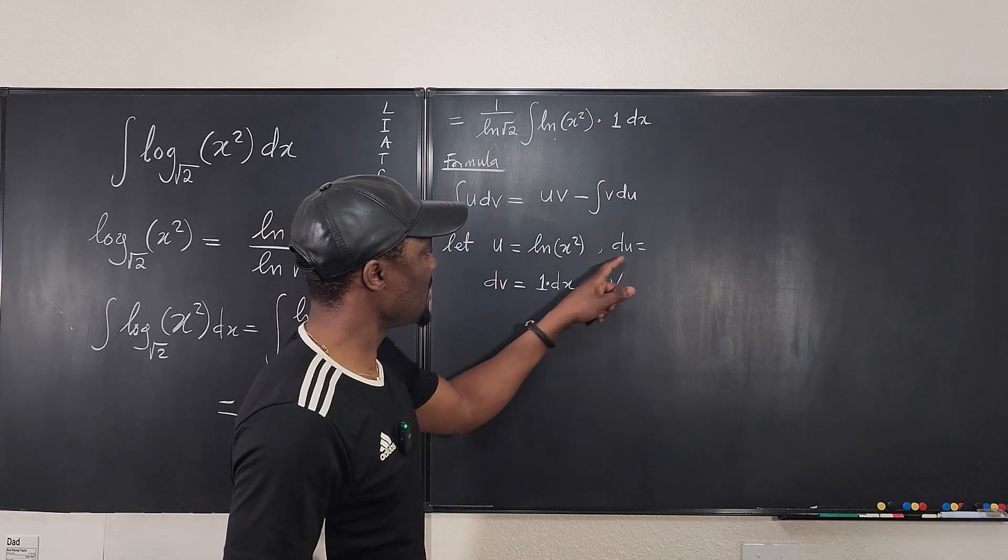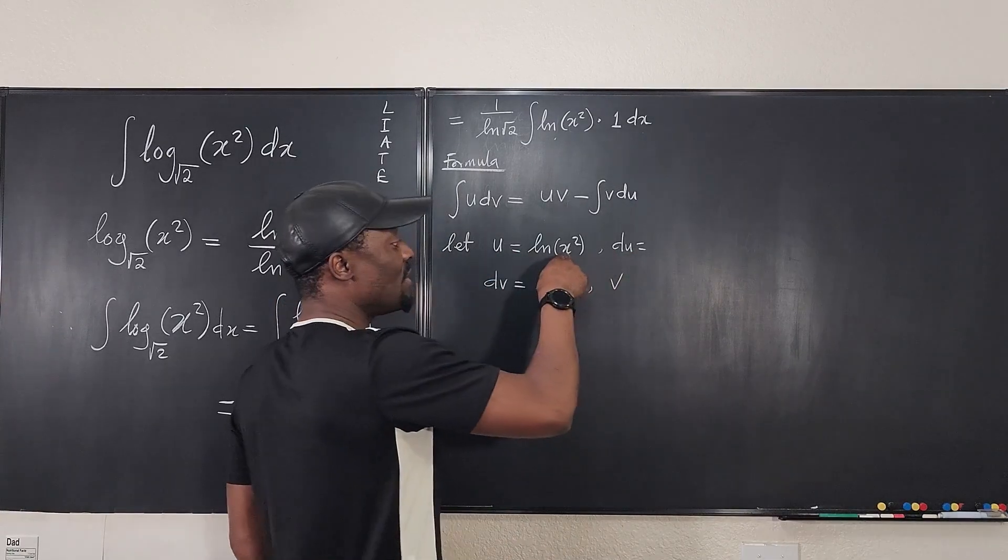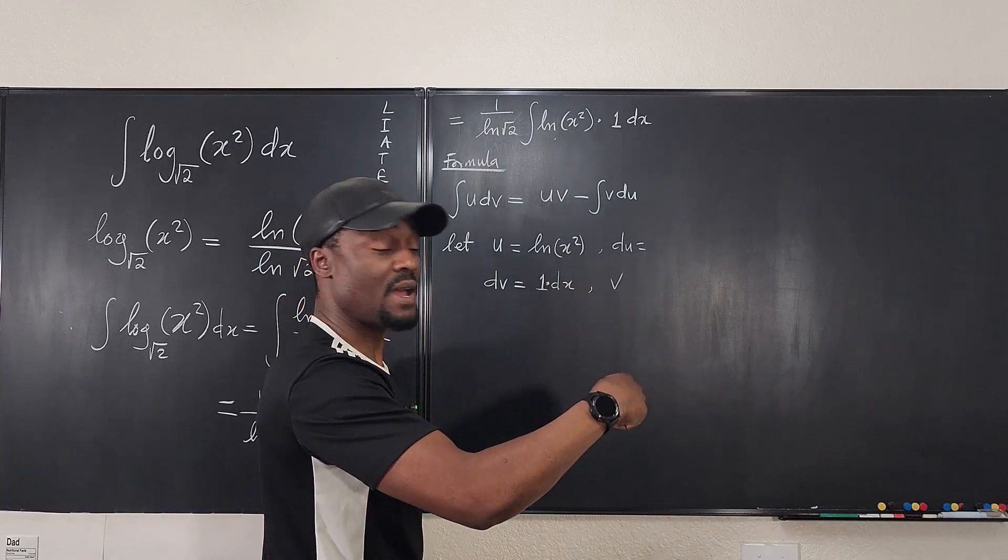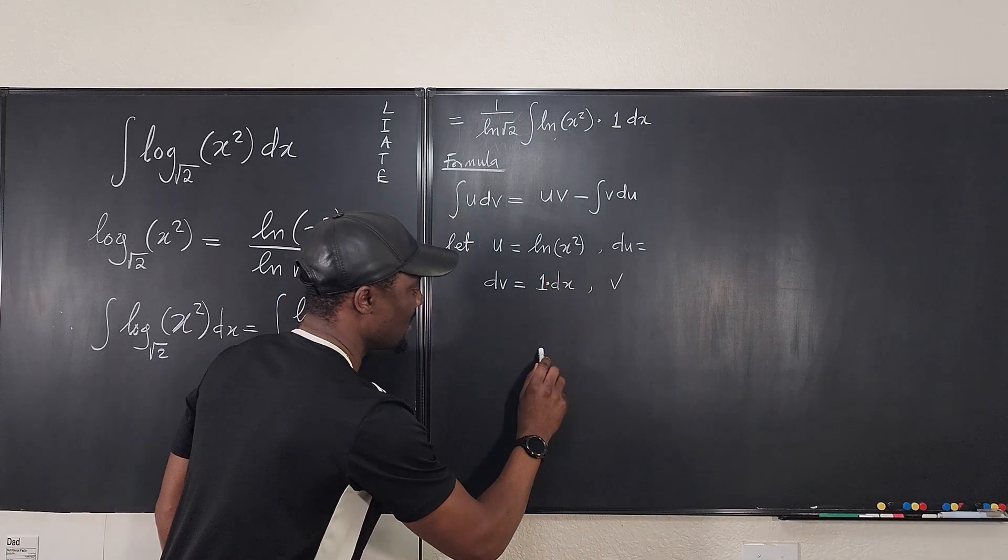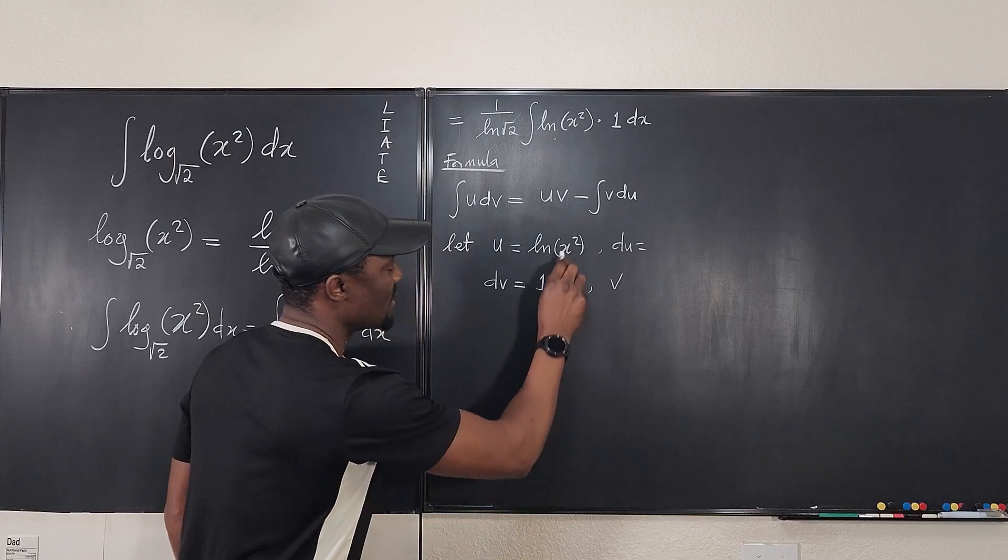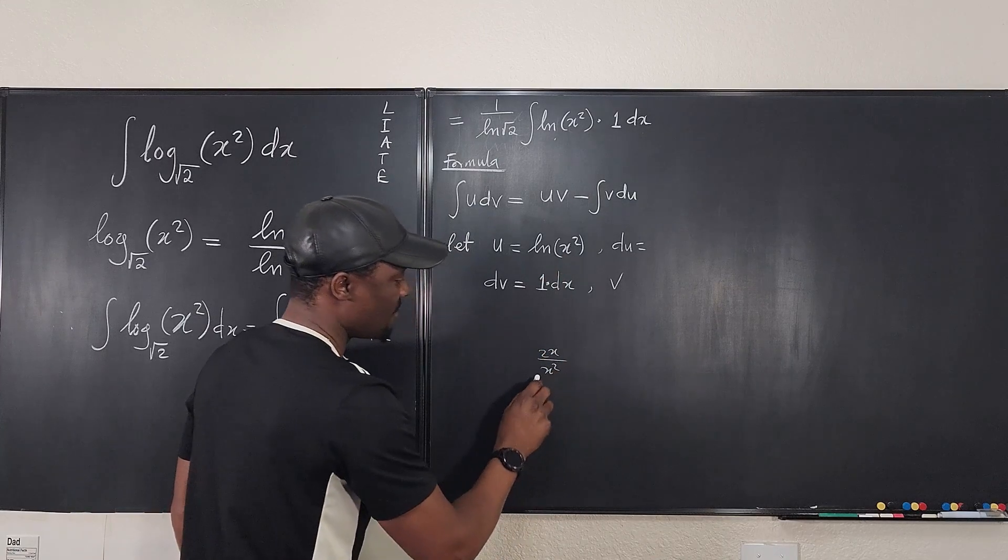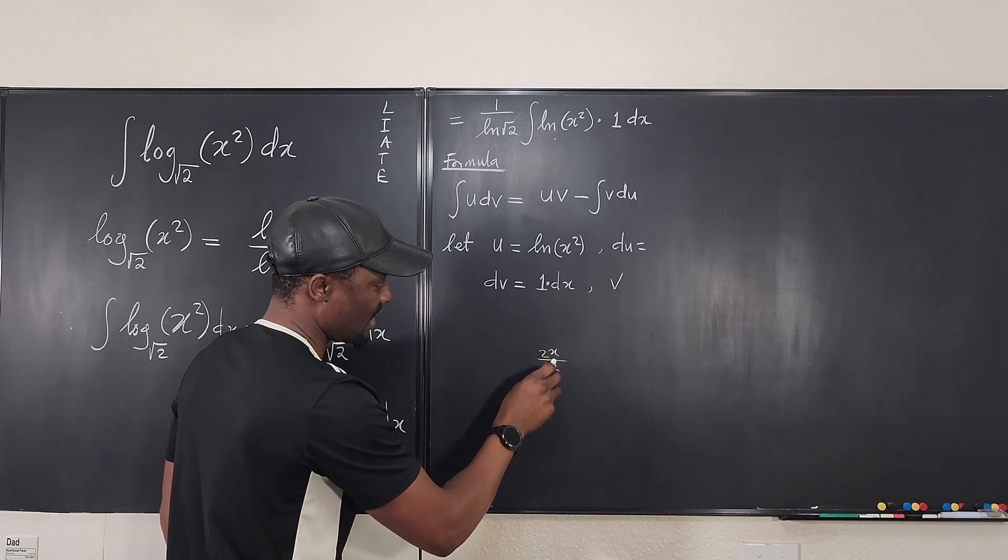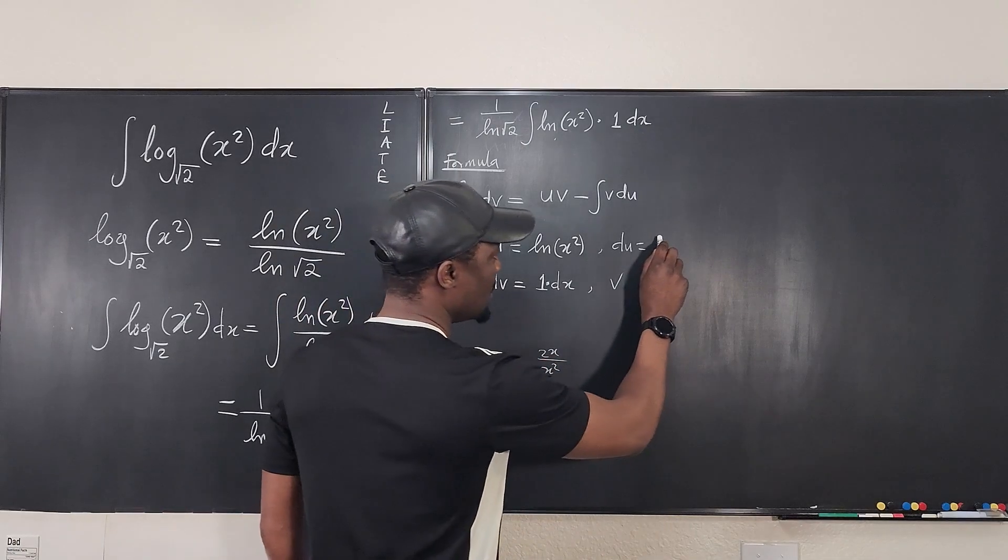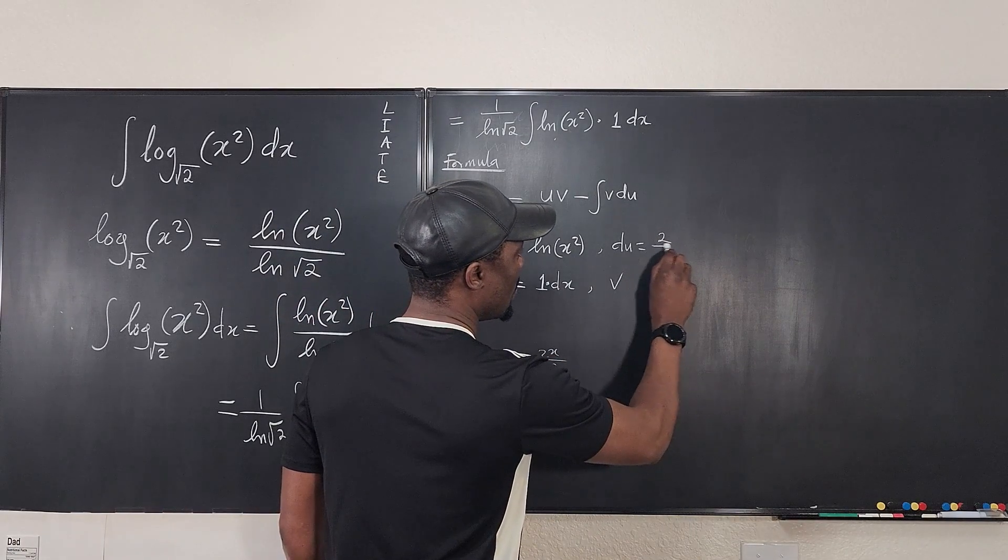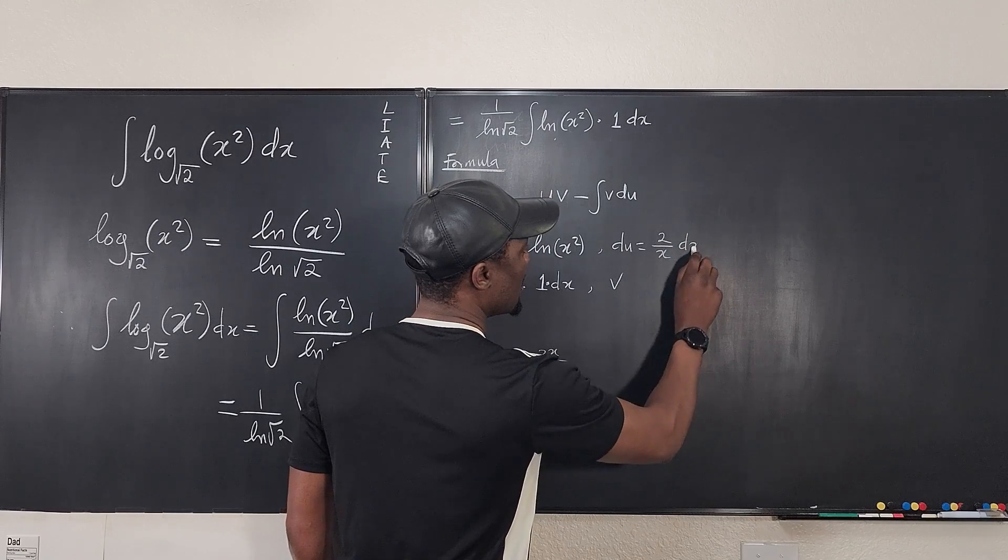And then we can find our v by integrating both sides. So at this point, if I take du, what does du give me? The derivative of the argument divided by the argument. So it's going to be 2x over x squared. If we simplify this, you notice we're going to end up with 2 over x. So du is 2 over x dx.